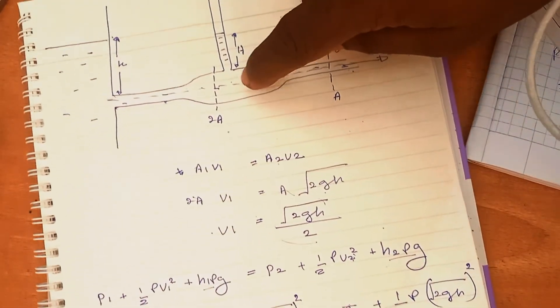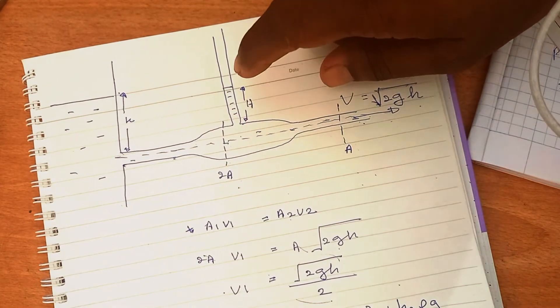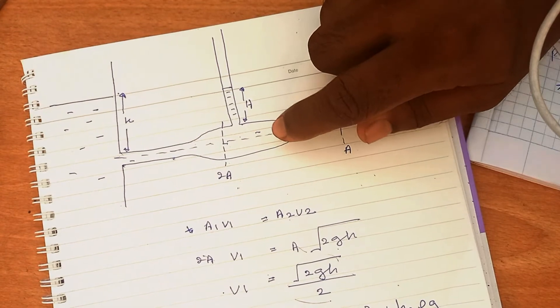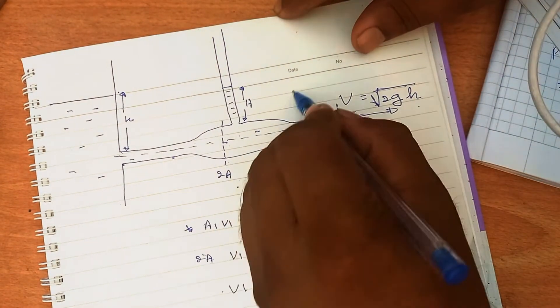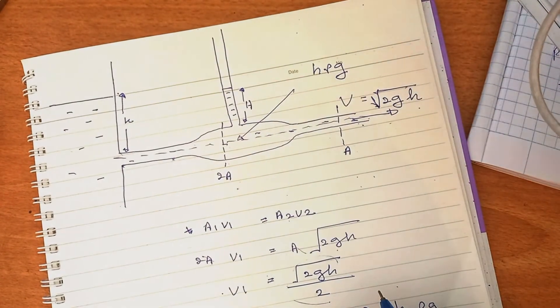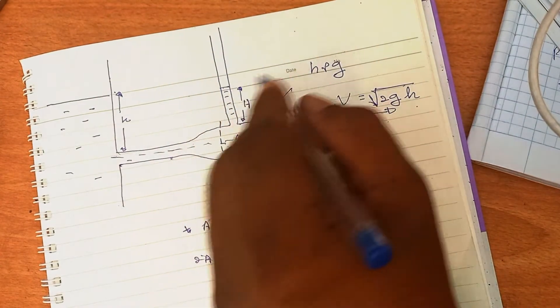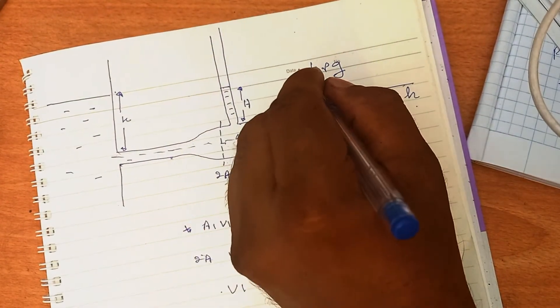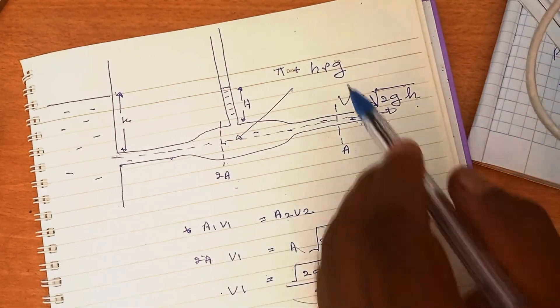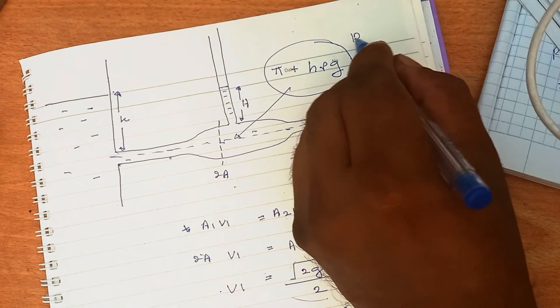What is P₁? Pressure at this point: pressure at a certain depth is given by hρg. But we have to add the pressure above the surface, which is atmospheric pressure Pᵢ again. So P₁ = Pᵢ + hρg. This is P₁. Substitute.